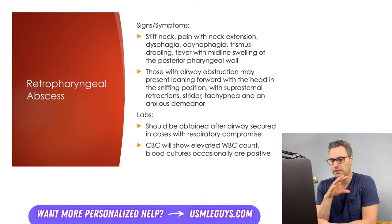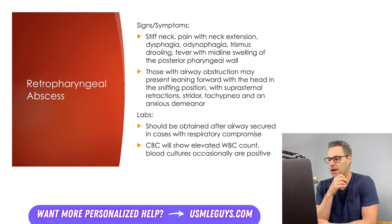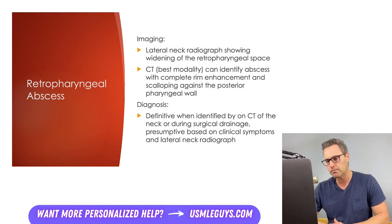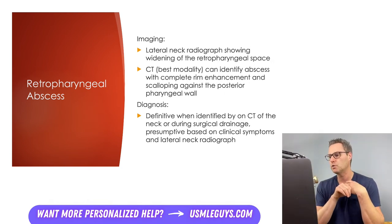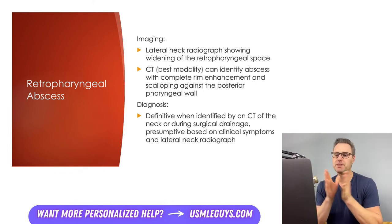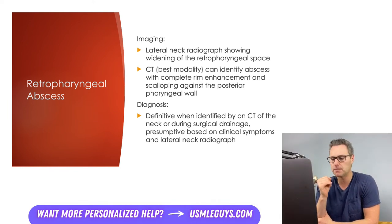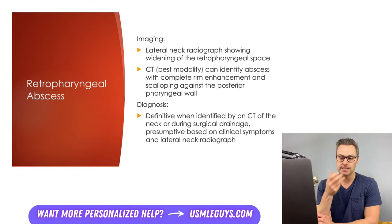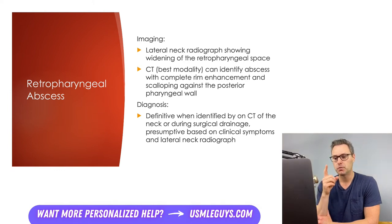As for imaging, a lateral neck radiograph will often be obtained, typically showing nonspecific findings such as widening of the retropharyngeal space. However, a contrast CT of the neck is the best modality because it can identify the actual abscess, which appears as a mass with rim enhancement and scalloping pressing on the posterior pharyngeal wall. The CT can also detect whether the abscess extends to other areas of the neck, involves blood vessels or critical tissues, and can identify if only cellulitis is present without an actual retropharyngeal abscess.